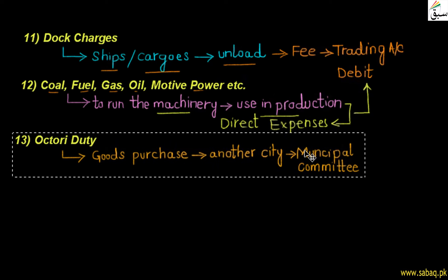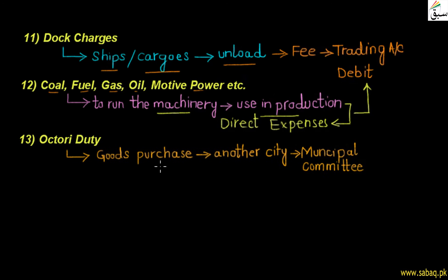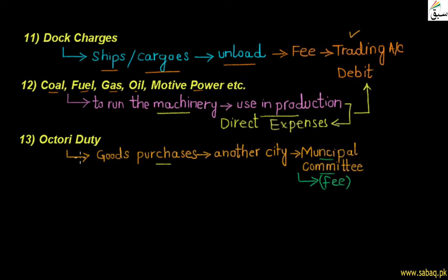Then we have octroi duty. What is octroi duty? When we purchase goods that come from other cities, we have to pass through the municipal committee — a local government body that works for a city. We pay a fee to the municipal committee for those goods entering the city. This fee is called octroi duty. It is related to our purchases, which are direct expenses, so octroi duty also comes to the debit side of the trading account.